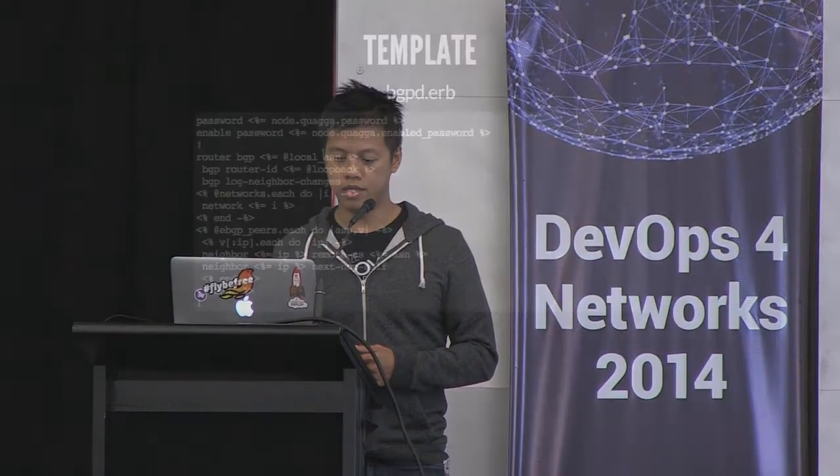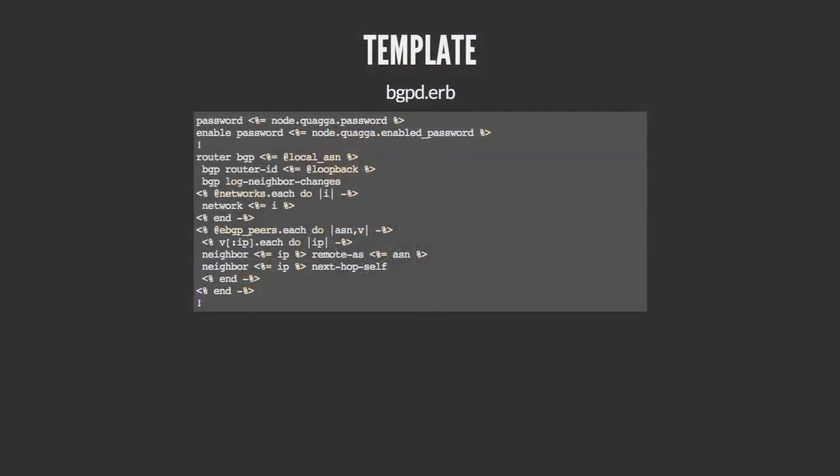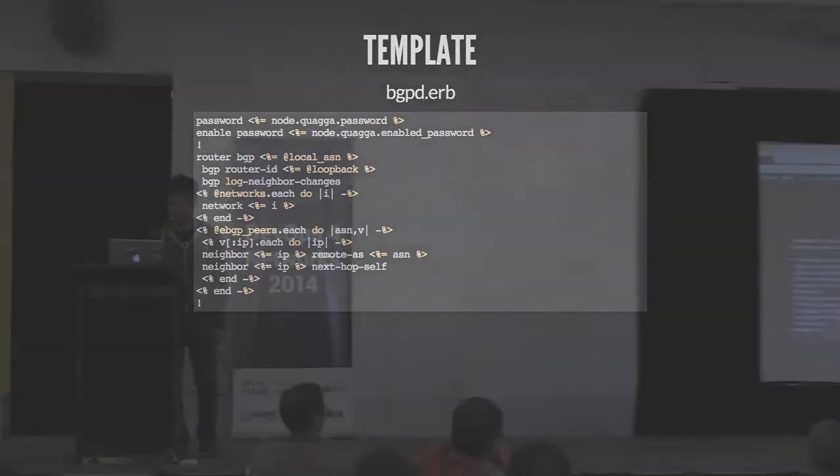This is what the template looks like — you'll probably recognize it. Router, BGP, local AS number. That's what's being pushed down into the switch.